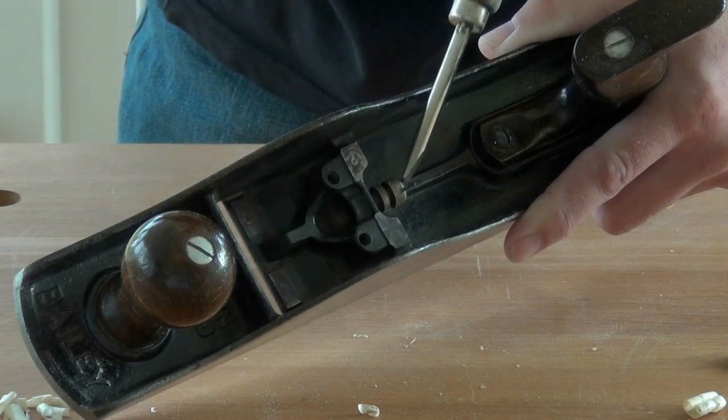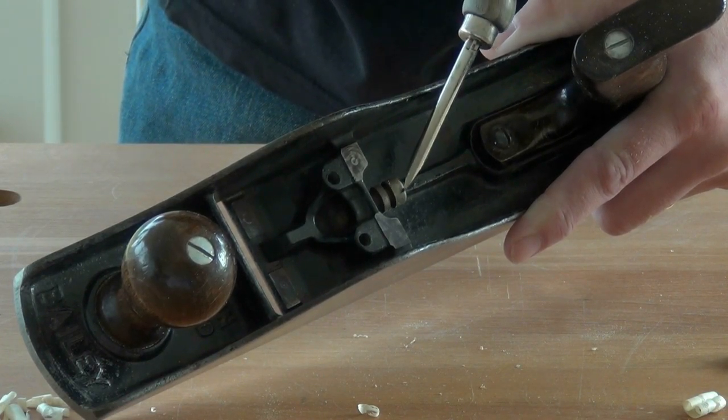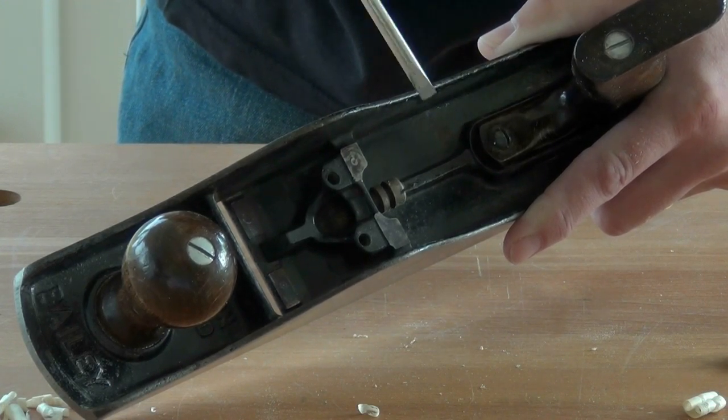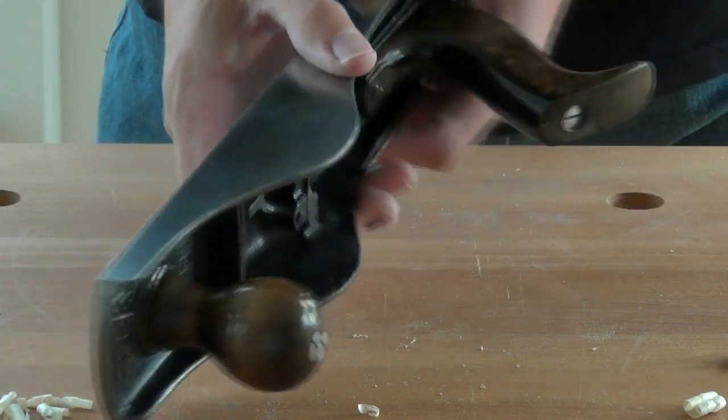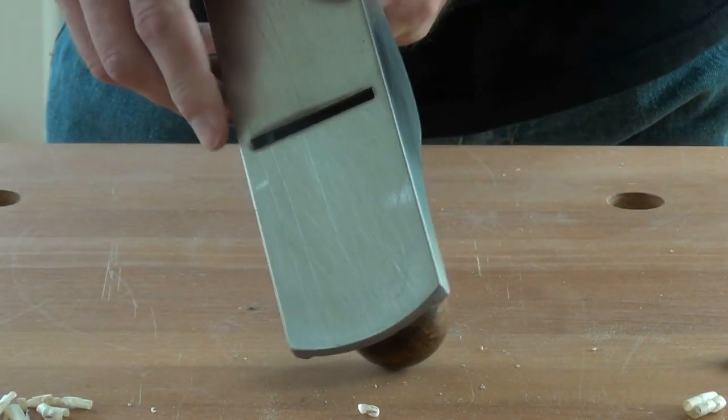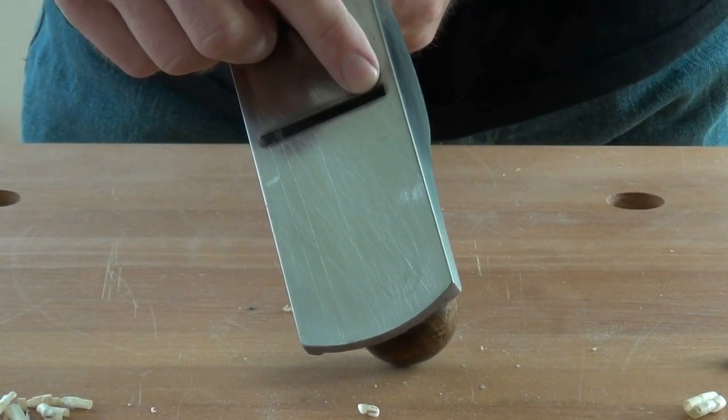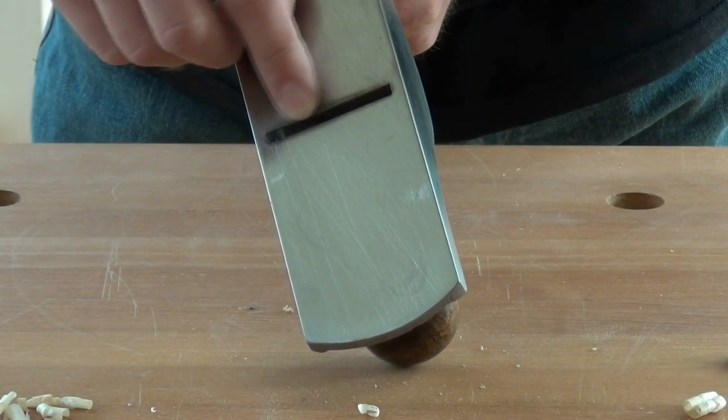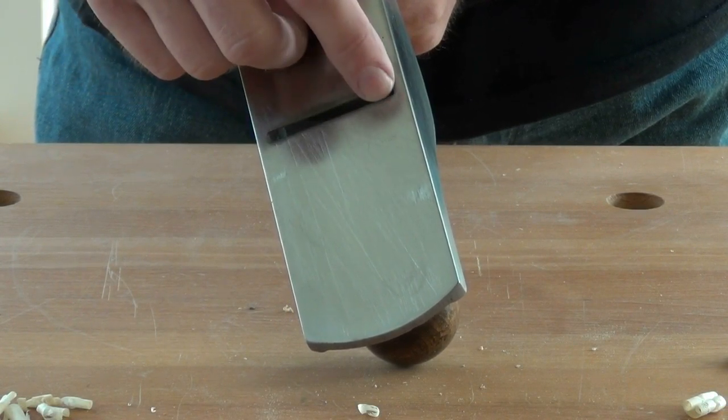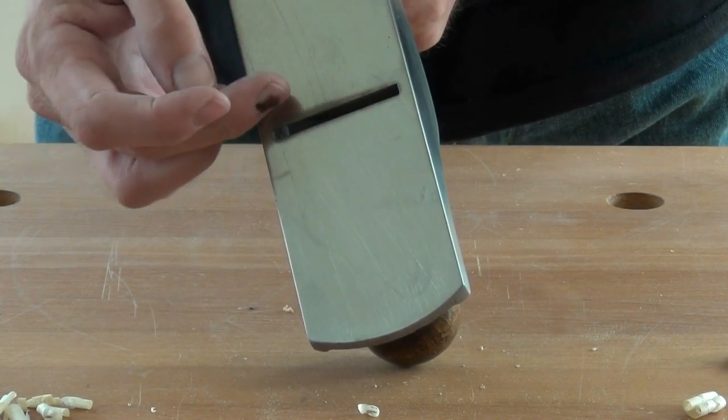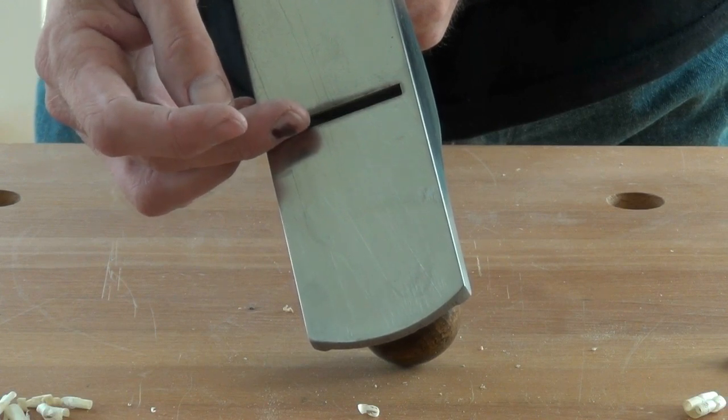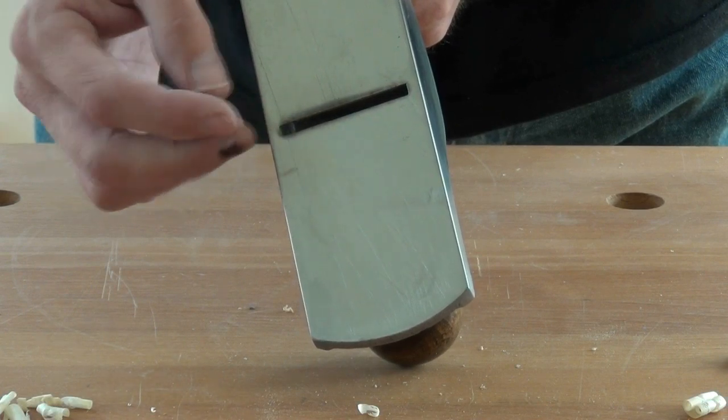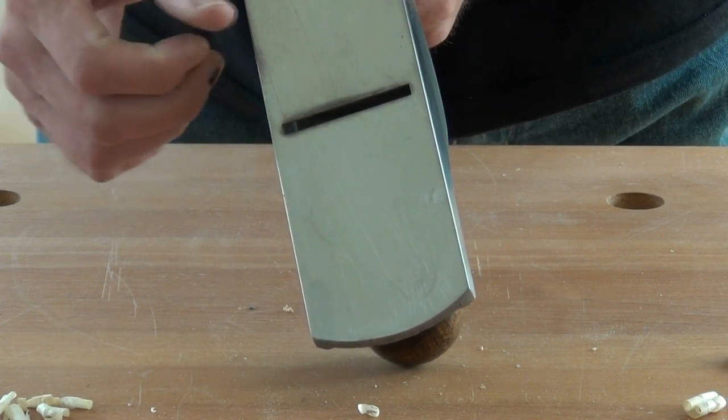There's a screw mechanism in the back here for advancing and retarding the frog in the body of the plane. The effect of that is to achieve a setting between the front of the iron, front of the blade, and the very front of the mouth. So we can close up that gap which will give more support to the fibers we're planing, but it also will reduce the thickness of the shaving that we can take.